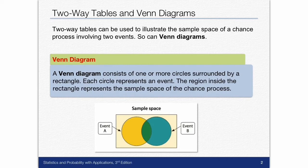Two-way tables can be used to illustrate the sample space of a chance process including two events. So can Venn diagrams. Same information, just a different way of showing it.